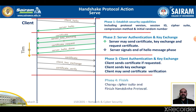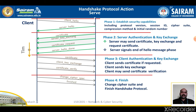The fourth and final phase is called finish. This phase completes the setting up of a secure connection. The client sends a change cipher specification message and copies the pending cipher specification into the current cipher specification. Note that this message is not considered part of the handshake protocol but is sent using the change cipher specification protocol. The client then immediately sends a finished message under the new algorithm keys and secrets. The finished message verifies that the key exchange and authentication process were successful.